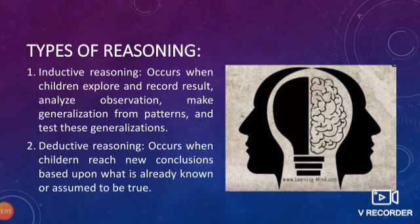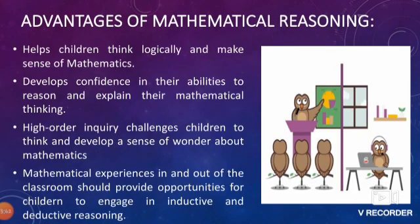Deductive reasoning occurs when children reach new conclusions based upon what is already known or assumed to be true. In inductive reasoning, children must explore and record results, analyze observations, make generalizations from patterns, and then test these generalizations.